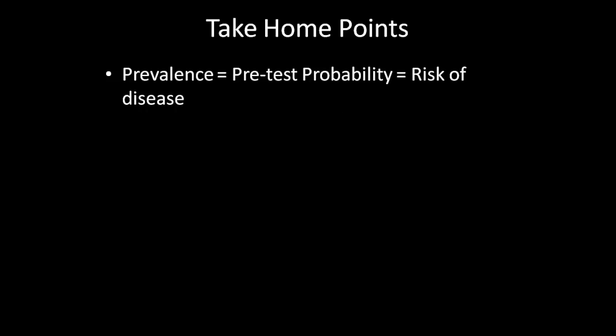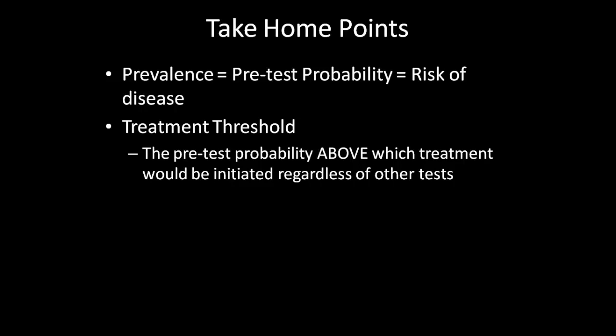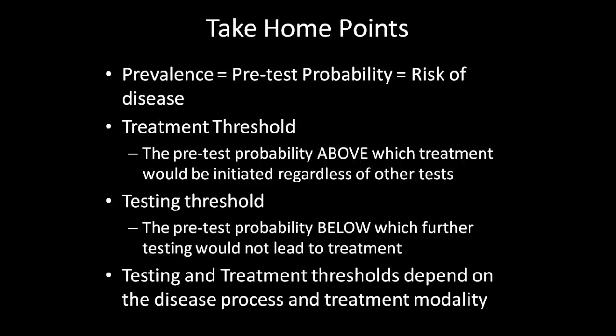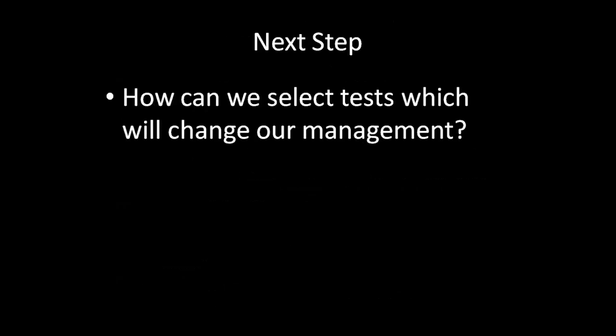Let's review the take-home points. First, prevalence is the same thing as pretest probability, which is the same thing as risk of disease. Also, the treatment threshold is the pretest probability above which treatment would be indicated regardless of other tests. The testing threshold is the pretest probability below which further testing would not lead to changes in management. Finally, the testing and treatment thresholds depend on the specific disease process and the specific treatment modality being discussed. The next step would be discussing how we select the tests that we use and how these will change our management of the patient.